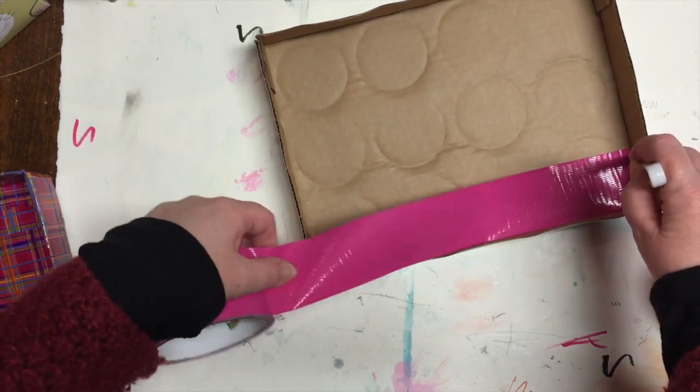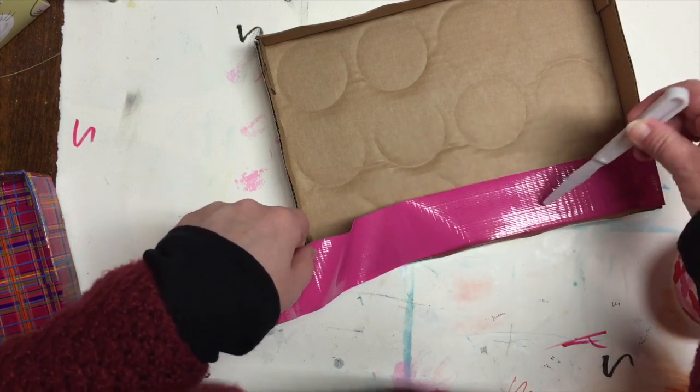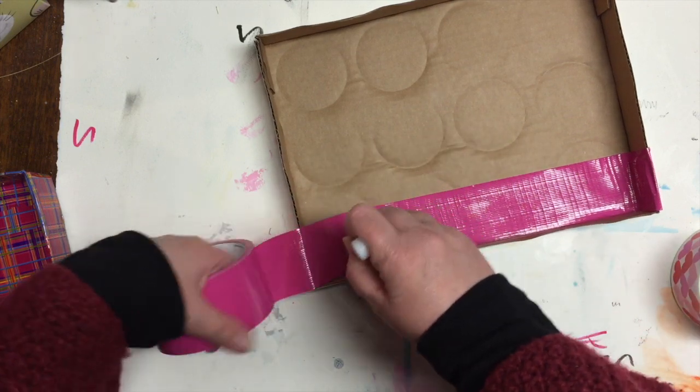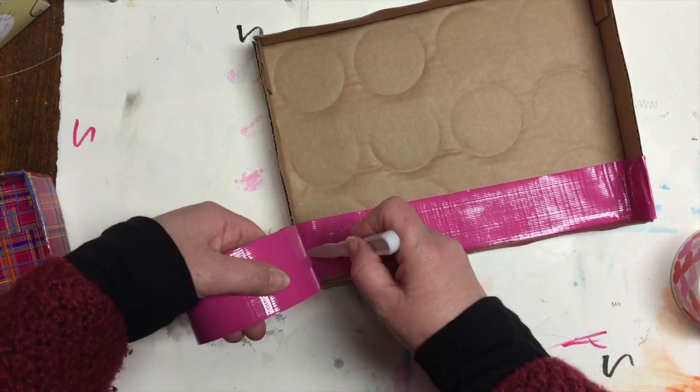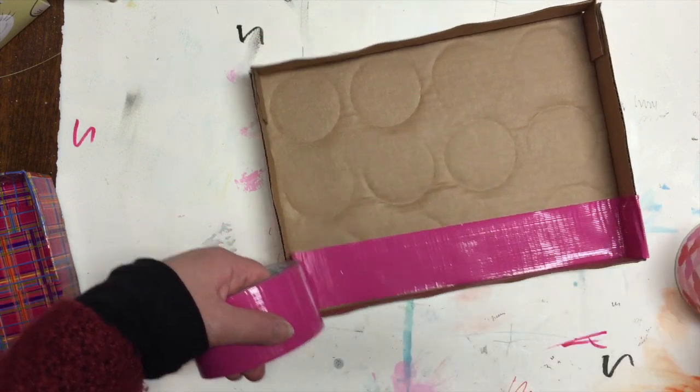And you know what, the palette knife just worked out fine. Another thing you can use is a plastic knife, or maybe a credit card, even an old credit card. It just helps to get that tape started onto the cardboard.